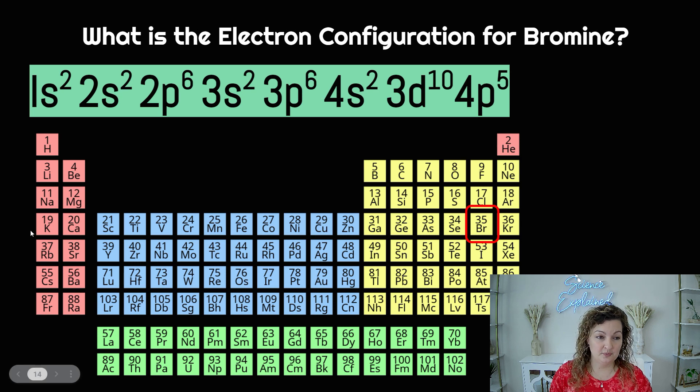Now we're going to go down a row, so we're on the fourth row or period. We're going to write S for the S block. Fourth row, S block, and we're going to go over two. Go ahead and write that two.